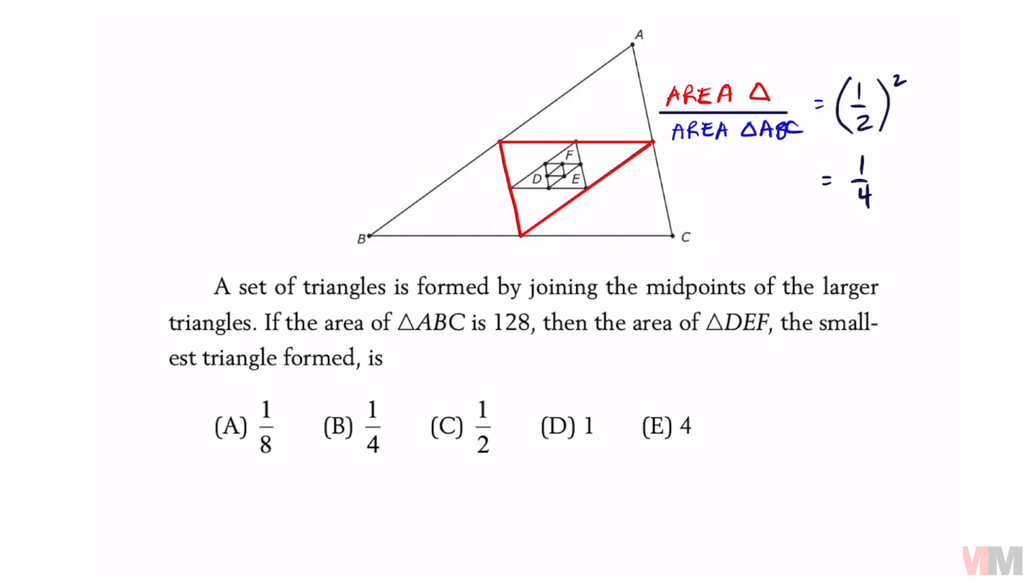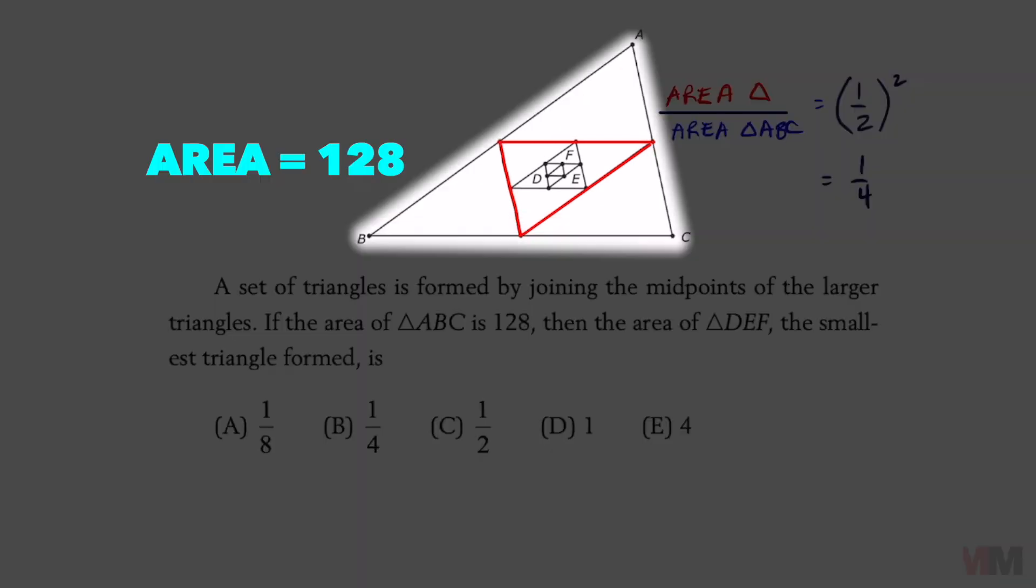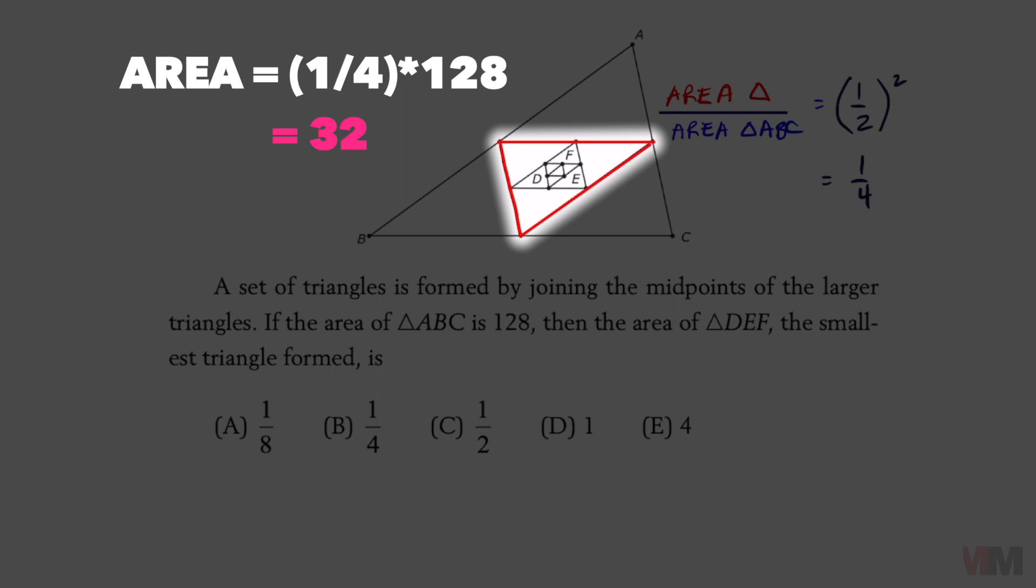So now that we know that, we can do this cool problem. If the area of triangle ABC is 128, one fourth of that will represent the area of that red triangle, which is going to equal 32.